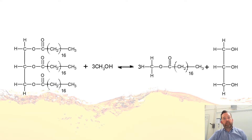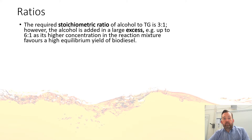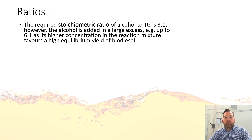So here is the equation: glycerol tristearate mixed with methanol produces three molecules of methyl tristearate — that's our biodiesel — and glycerol as a byproduct. The required stoichiometric ratio of alcohol to triglyceride is three to one, as seen from the equation. However, we add alcohol in a large excess of about six to one, which gives us a higher equilibrium yield of biodiesel.